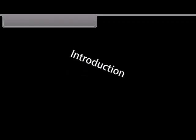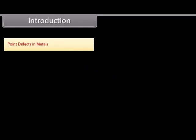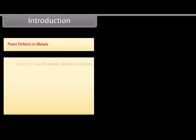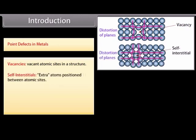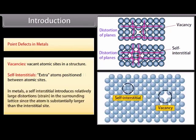Introduction. Point defects in metals: Vacancies are vacant atomic sites in a structure. Self-interstitials are extra atoms positioned between atomic sites. In metals, a self-interstitial introduces relatively large distortions and strain in the surrounding lattice, since the atom is substantially larger than the interstitial site.